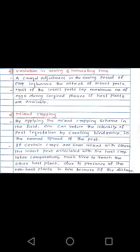The sixth method is variation in sowing and harvesting time. A careful adjustment in the sowing period of a crop influences the attack of insect pests. Most insect pests lay the maximum number of eggs during confined phases when host plants are available. By changing the sowing and harvesting time, we can control the life cycle of insect pests, as these insects are adjusted to certain seasons.